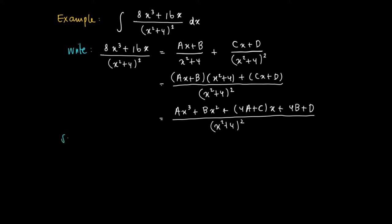If we solve for a, b, c, and d, we find a equals 8, b equals 0, since there's no quadratic term. 4a + c should equal 16, since on the left-hand side we have 16x. There's no constant, so 4b + d equals 0.